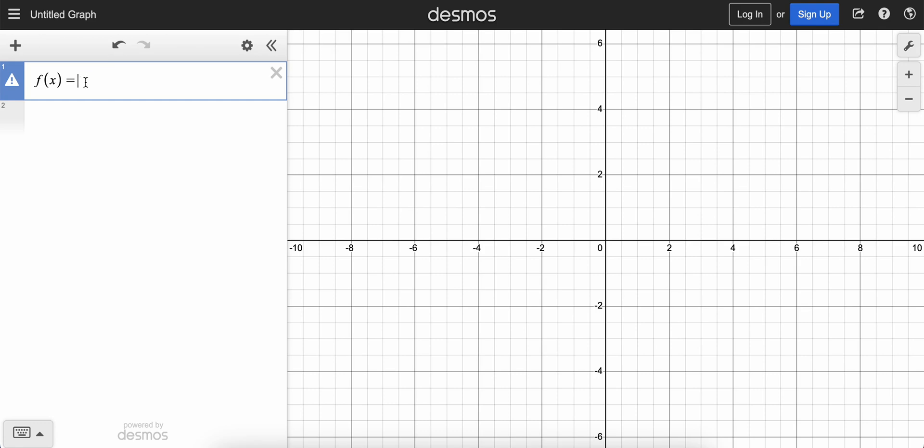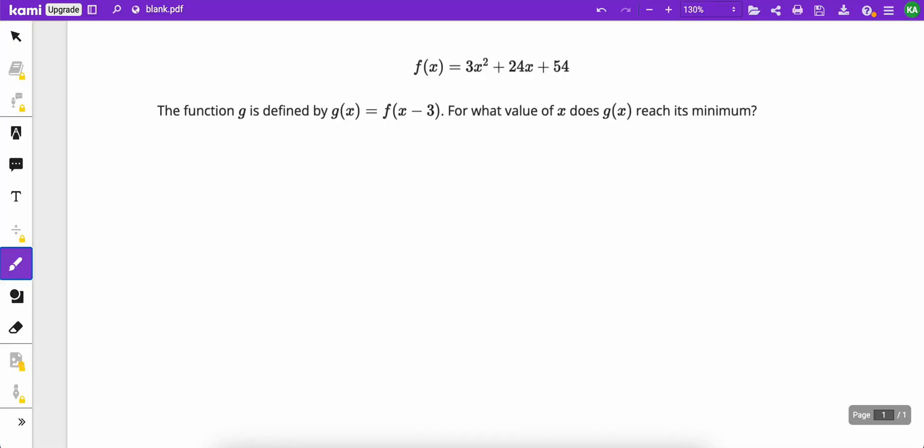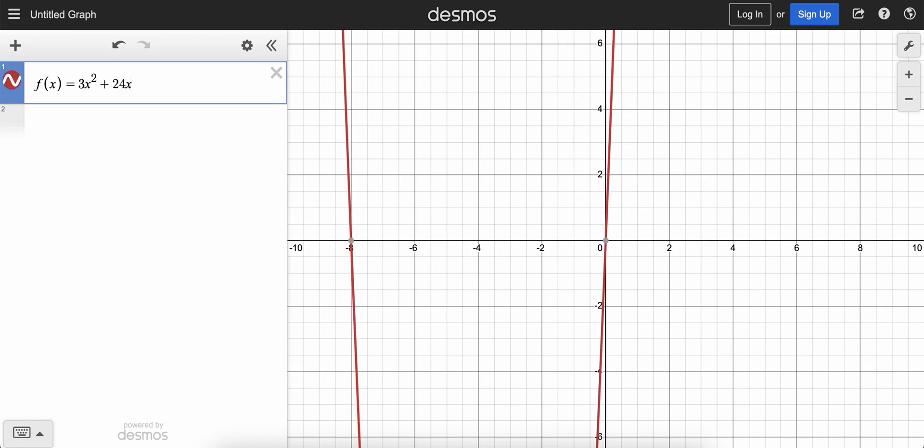So call it f of x equals 3x squared plus 24x plus 54, and then for the second one,